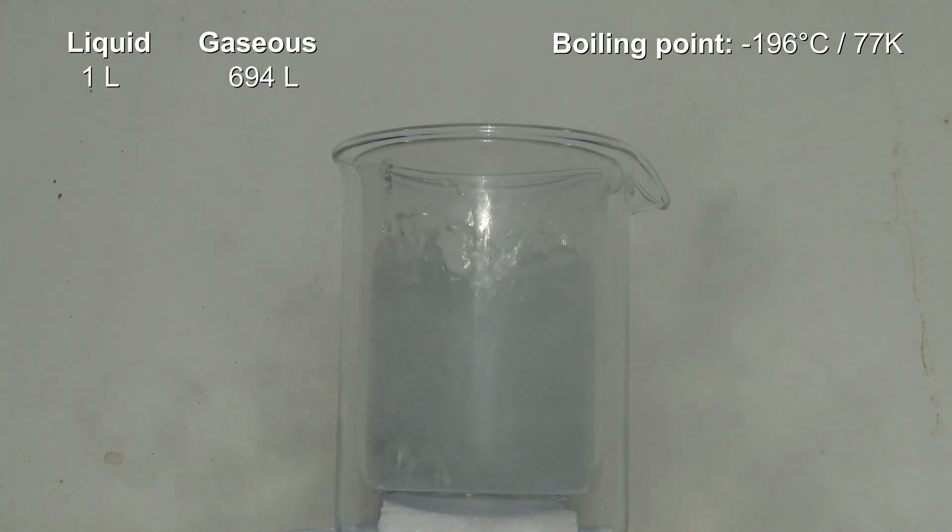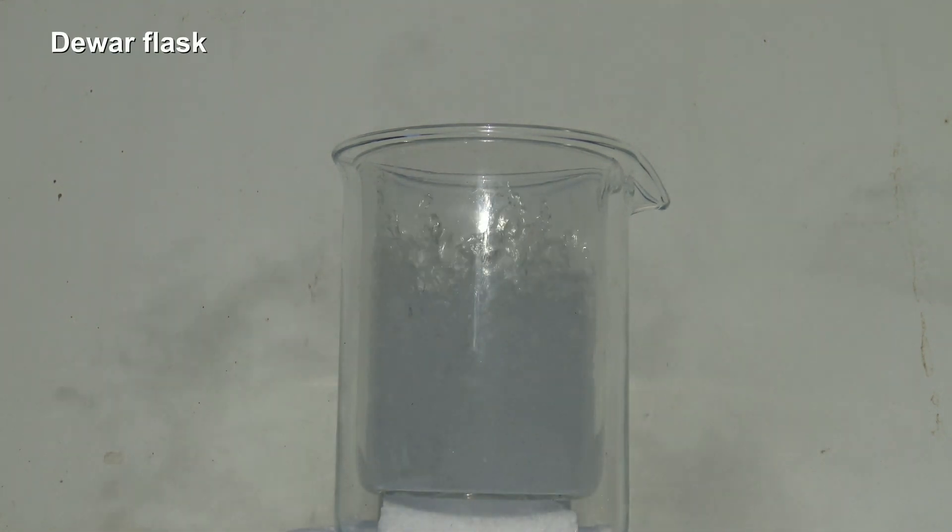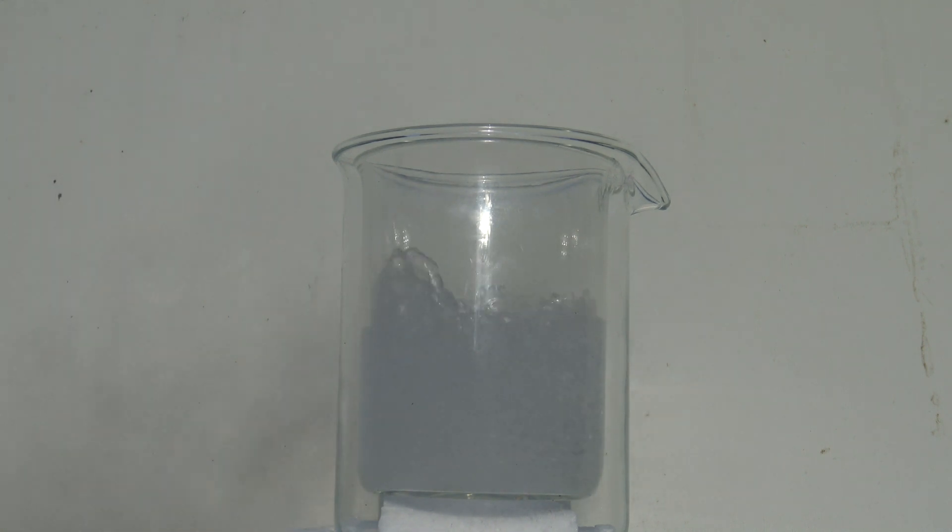To slow down evaporation it is usually put in a duo flask which has a hollow space between the inner and outer wall. Here a similar hollow space is achieved by using two different beakers but the isolating properties don't get close to a real duo flask like this one made of metal.